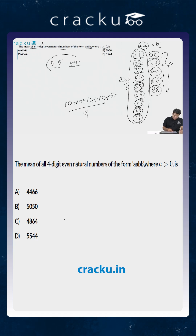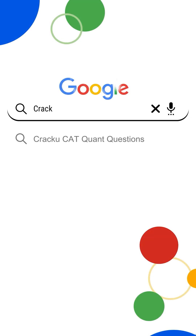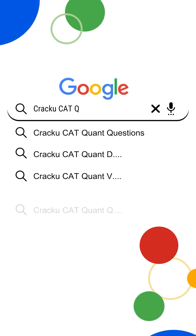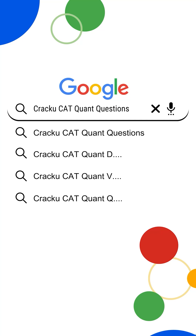So the average of all such numbers will be equal to 5544, so the correct answer will be option D. If you like this question and want more quant practice, just go to Google and search CrackU CAT quant questions.